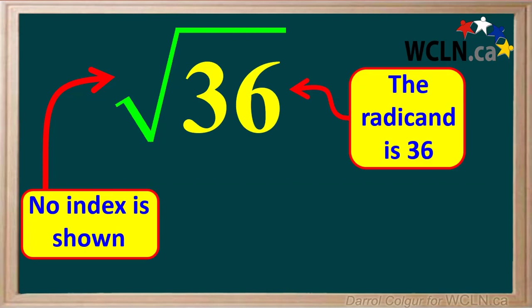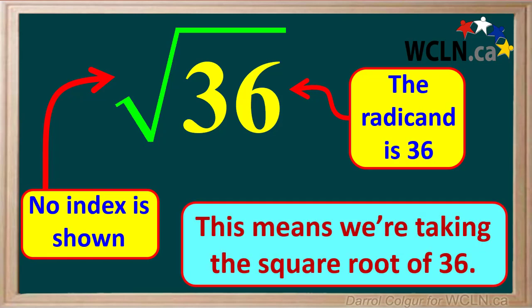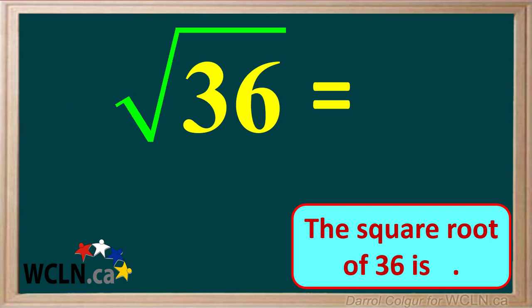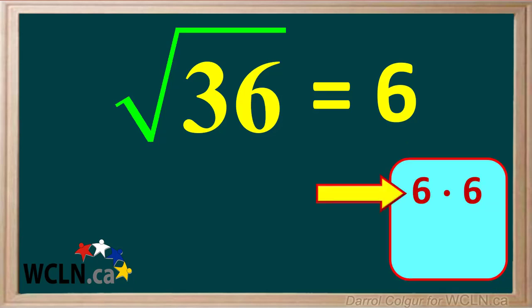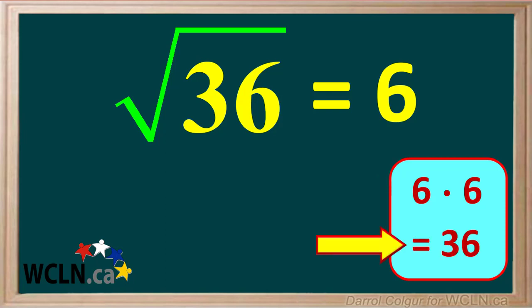So this expression with no index shown and 36 under the radical sign means we're taking the square root of 36, and we know that the square root of 36 is 6. This means that 6 multiplied by itself is equal to 36 — 6 times 6 is equal to 36.